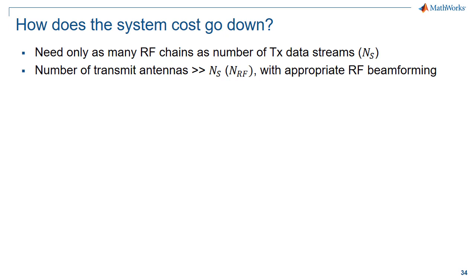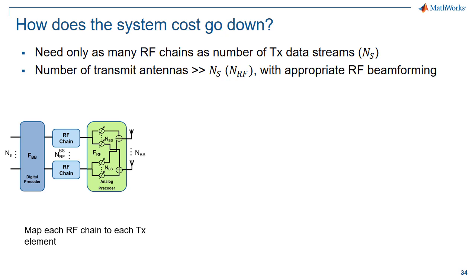We only need as many RF chains as the number of TX data streams, as opposed to having the same number of RF chains dedicated one per element. In the end, the number of transmit antennas greatly exceeds the number of RF chains. With this beamforming mix, we can make it work.